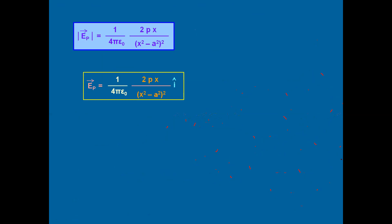Now for the special case of an ideal dipole: when the separation a is very, very less than x, then x²−a² ≈ x², so the expression becomes (2Px) / (4πε₀ × x⁴). One x gets cancelled, giving the final simplified equation: E = 2P / (4πε₀x³). This is the magnitude, and the direction is from negative to positive charge.